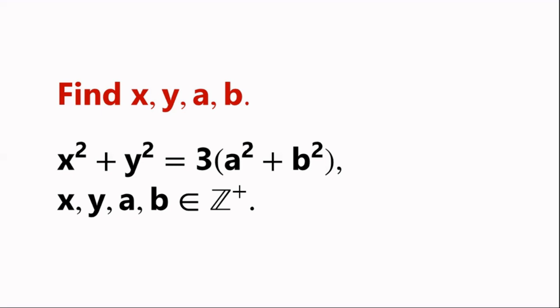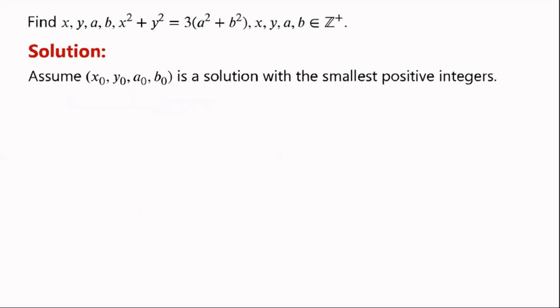b are positive integers. We assume x0, y0, a0, b0 is a solution with the smallest positive integers. Then x0 squared plus y0 squared equals 3 times a0 squared plus b0 squared,